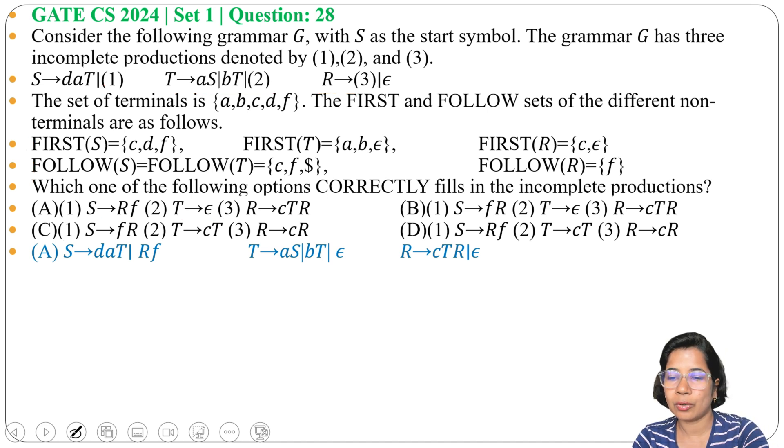Next find the first and follow. First of S equals to D and first of R. First of R are C and Epsilon. So just check - first of R are C and Epsilon. Yes. First of S will be D, C, and in place of R if we are writing Epsilon we will get F. So D, C, F. Yes.